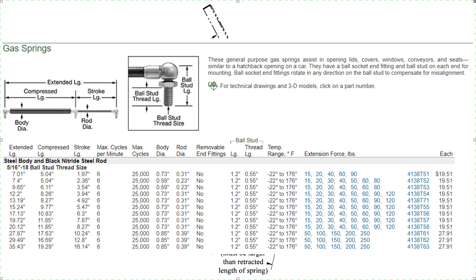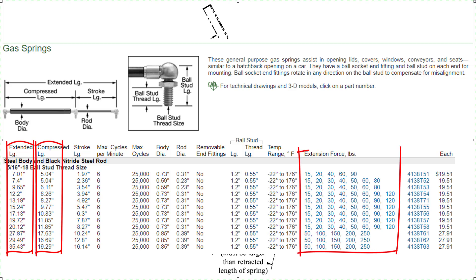Here's a page from the online McMaster catalog showing a list of possible gas springs we could use. Notice how this site lists both the extended and compressed lengths for each option. It also lists all the possible extension forces available for each size. The extension force of a gas spring is relatively constant as the spring is compressed — that's why we call them constant force gas springs. That force depends on the nitrogen pre-charge pressure inside the spring, so purchasing a higher spring force simply means it has a higher nitrogen pre-charge pressure.